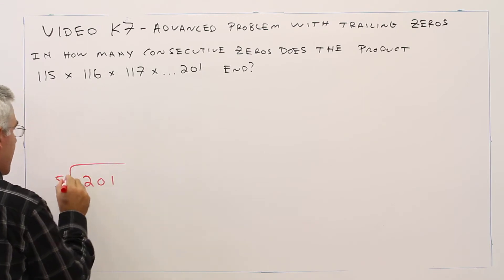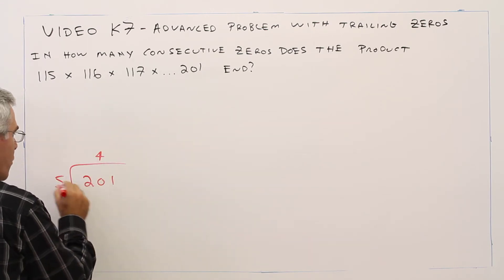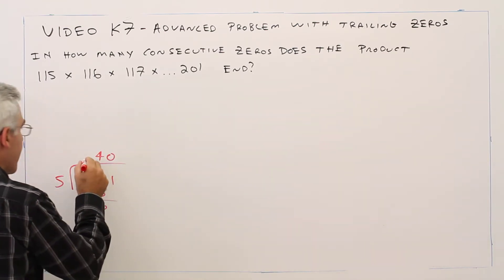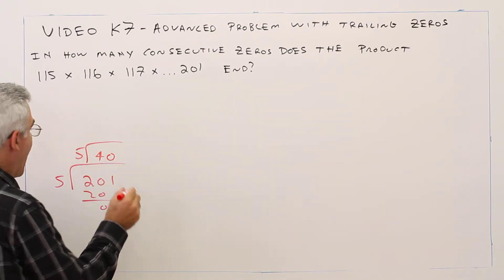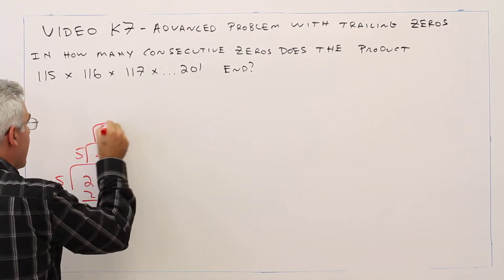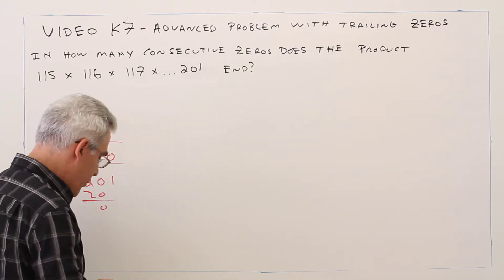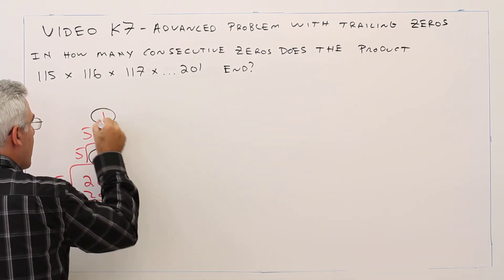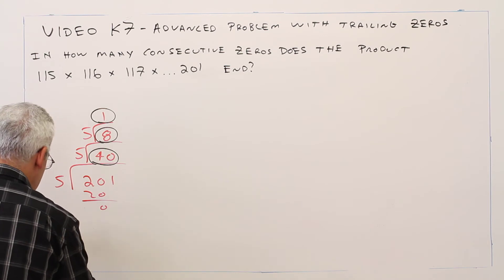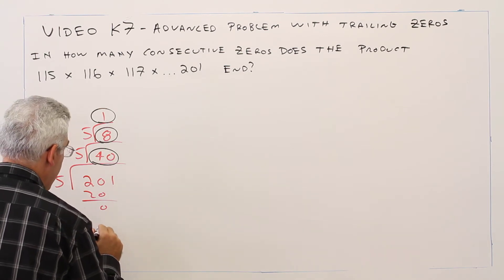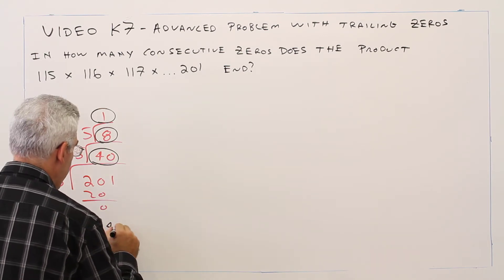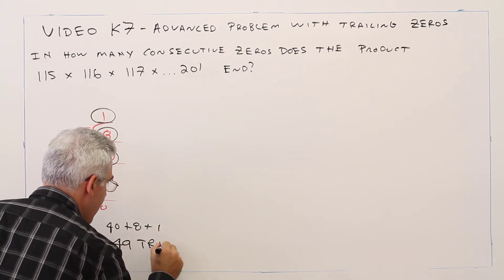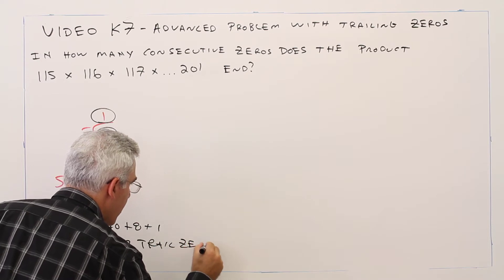201 divided by 5: 40, remainder don't care. Divide by 5: 8. Divide by 5: 1, don't care about the remainder. So 201 factorial has 40 + 8 + 1, which is 49 trailing zeros.